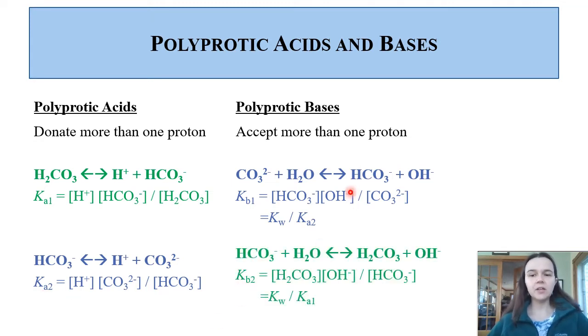Likewise, HCO3- can continue to grab a proton off of water and regenerate H2CO3. KB2 for this reaction is going to be equal to KW divided by Ka1. So you see this crisscross correlation between the equilibrium constants when you have a series of polyprotic acid and its conjugate polyprotic weak base.